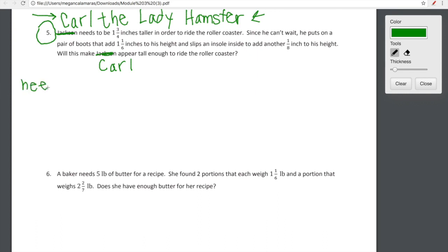So Carl needs to be exactly one and three fourths of an inch, but remember we're in lesson 13, so we're dealing with some kind of fuzzy numbers. We're going to go ahead and round one and three fourths of an inch to two inches. So he needs to be two inches taller to ride that roller coaster. He is a very clever hamster, so he finds some hamster boots that add one and one sixth inches to his height. We're going to go ahead and round, since it's only one sixth of an inch, we're going to round it to just one. That's a benchmark number. We're going to use one as a benchmark number. So he uses his hamster boots to add about one inch to his height.